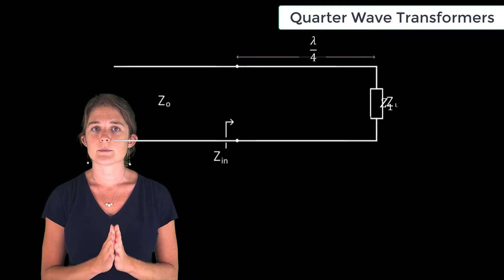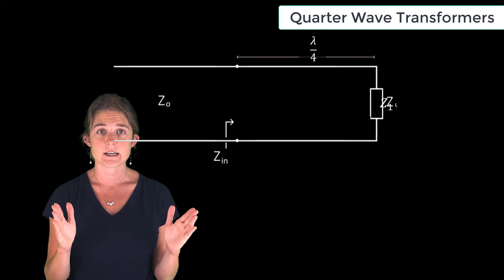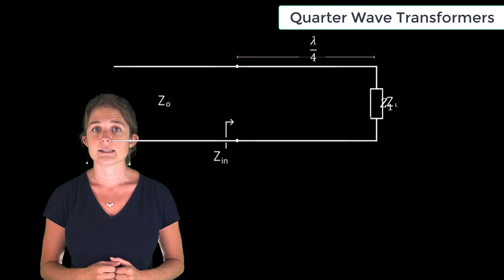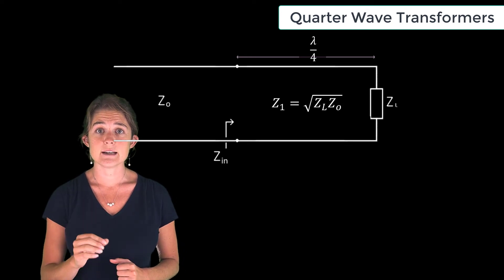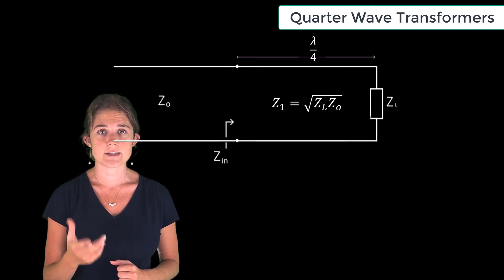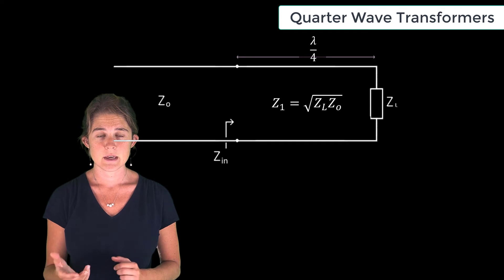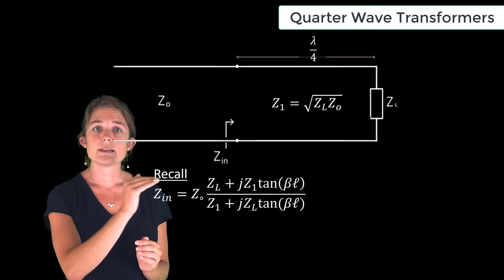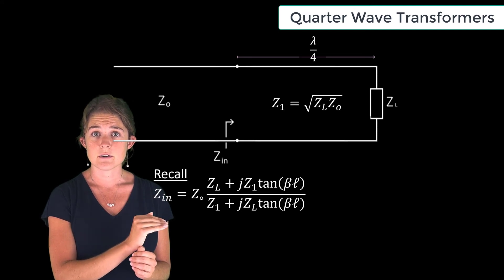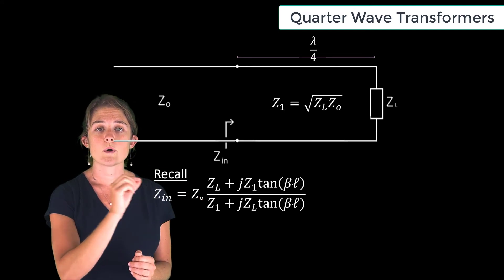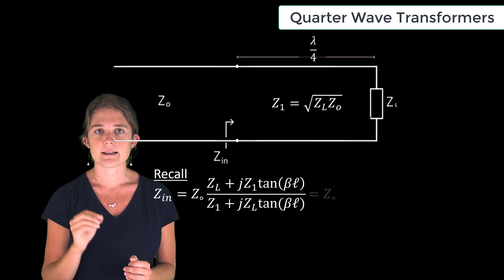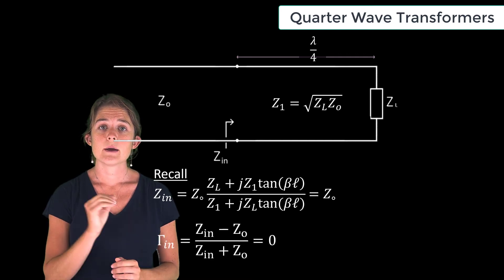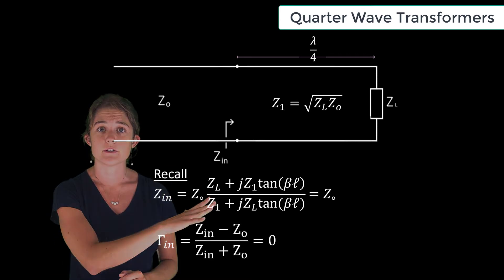A quarter wave transformer is just a quarter wave long section of transmission line with characteristic impedance Z1, which is designed to be equal to the square root of ZL times Z0. If you plug this value into the equation for input impedance, you will see that the input impedance of this section, loaded with ZL, works out to exactly Z0. This means gamma in will be zero, maximizing the energy transfer to the load.